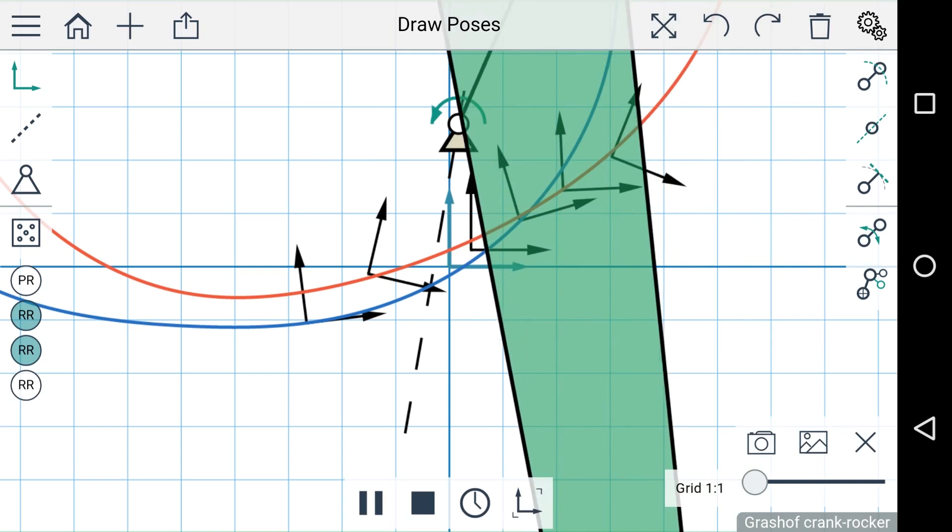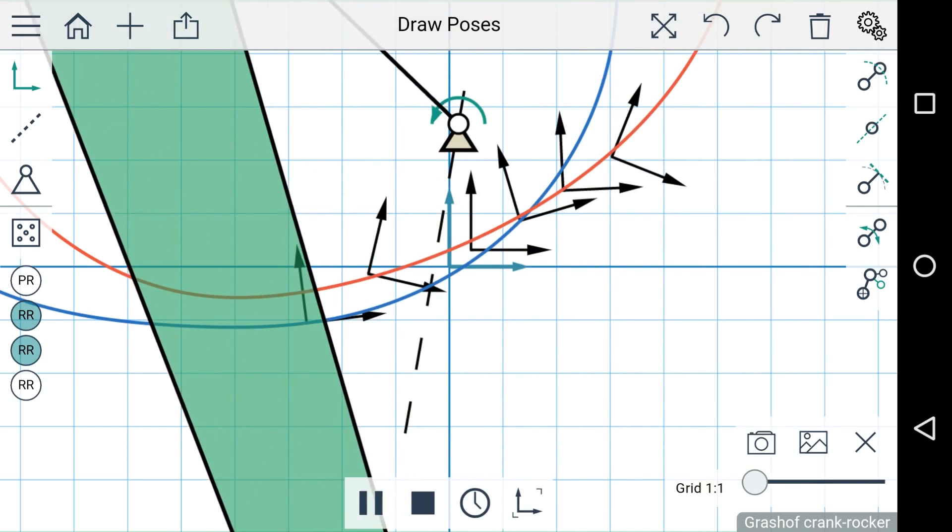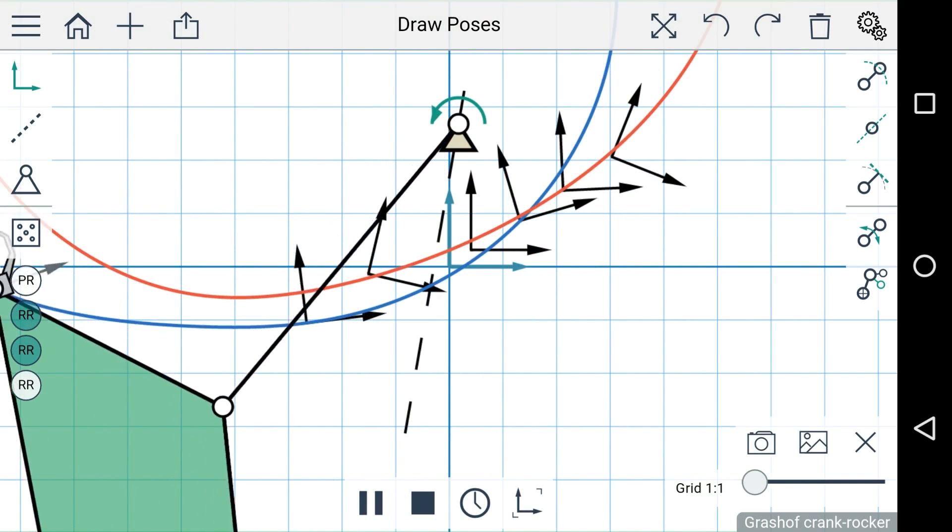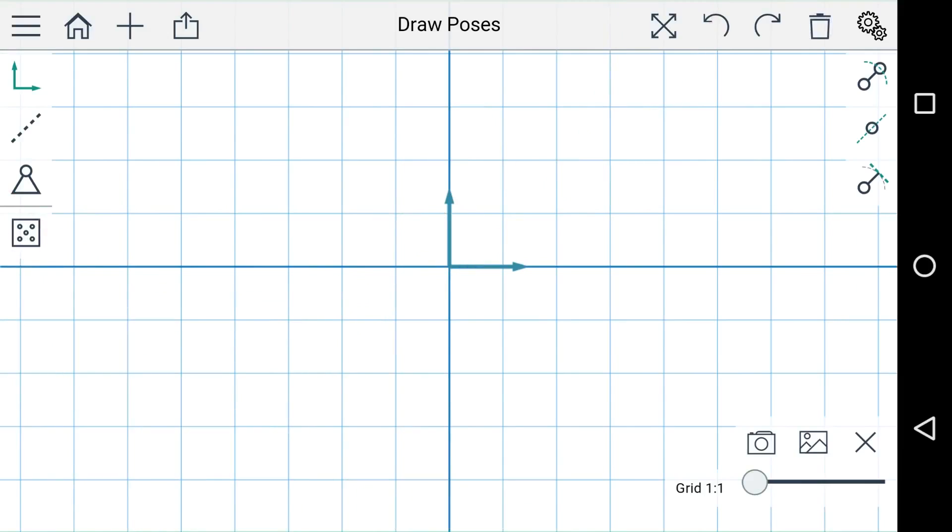So that's four-position synthesis, but we can also synthesize a mechanism using three positions. I'm going to delete this linkage. So I'll add three poses here, and since we need five total constraints we need to add two more. And these will be point constraints.